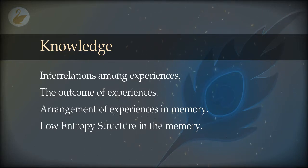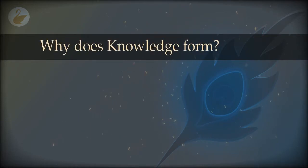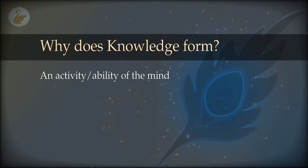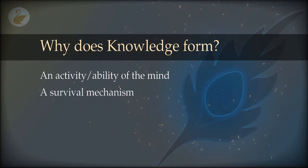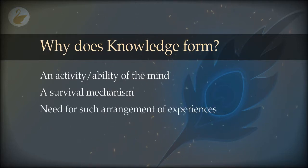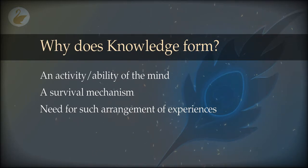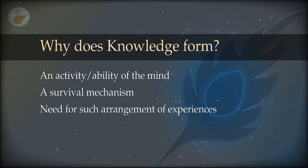A good question is: why does the mind do that? It is very natural — it is one of the abilities of the mind and one of its activities. This activity evolved as a survival mechanism, because the organism needs to arrange its experiences of its surroundings: who is the predator, what is my food, where is the water, what happens when I jump from this tree or touch hot rocks.